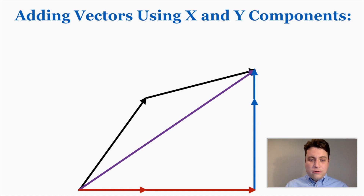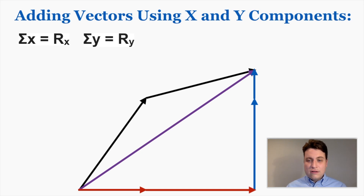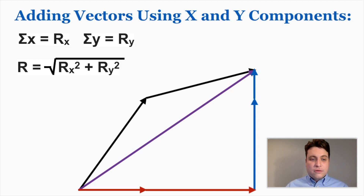This is going to be a rule for adding all vectors together: the sum of the x components equals the x component of the resultant vector, and the sum of the y components equals the y component of the resultant vector. And the resultant itself — because you have its x component and its y component — using the Pythagorean theorem, the resultant equals the square root of its own x component squared plus its own y component squared.